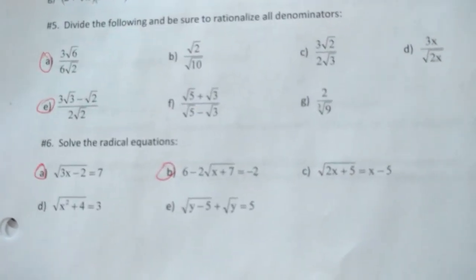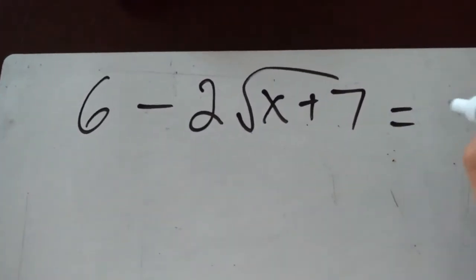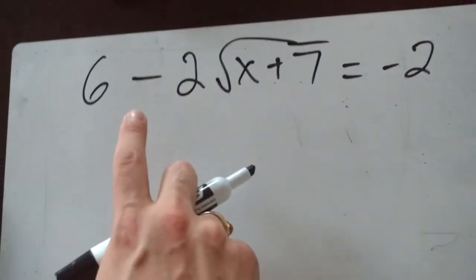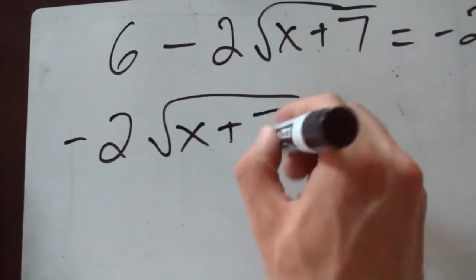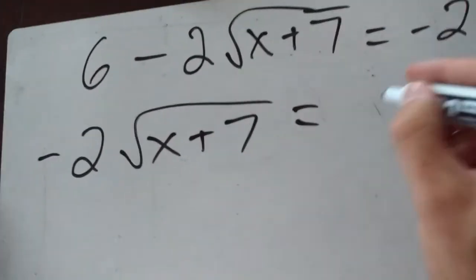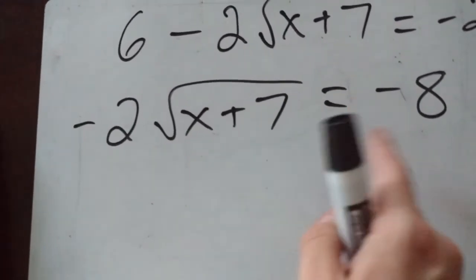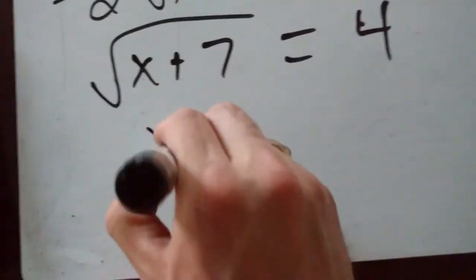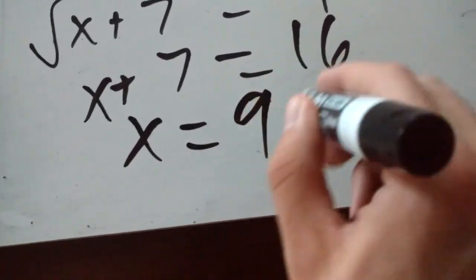Last question: 6 minus 2 times square root of x plus 7 equals negative 2. Isolate the radical: subtract 6 from both sides to get negative 2 root of x plus 7 equals negative 8. Divide both sides by negative 2: root of x plus 7 equals 4. Square both sides: x plus 7 equals 16. Subtract 7: x equals 9. Wait — x equals negative 3. So with that, radicals is all done!